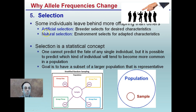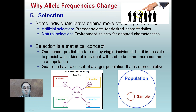The last agent is selection. Some individuals leave behind more offspring than others. Artificial selection is when breeders select desired characteristics, while natural selection is when the environment does the selecting. Selection is a statistical concept — you have a sample within a population and you're selecting for a particular individual. You cannot predict the fate of any single individual, but it is possible to predict what kind of individual will tend to become more common in a population and what traits that individual might have.